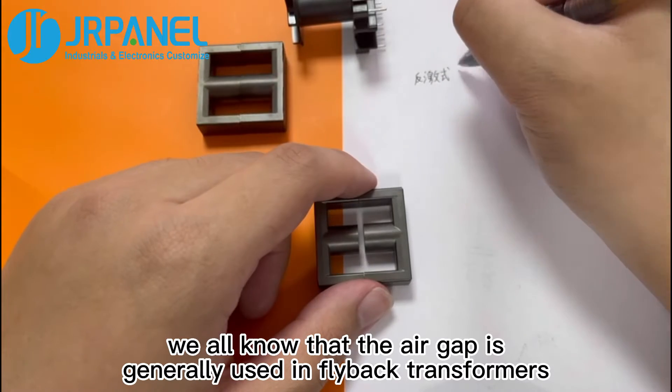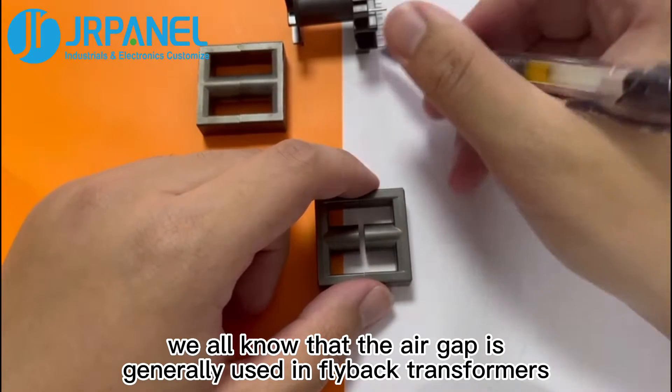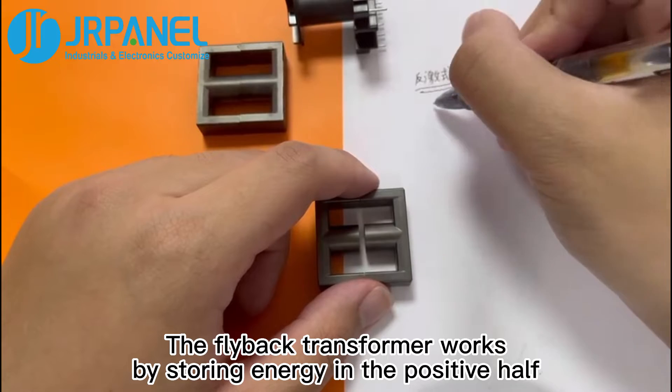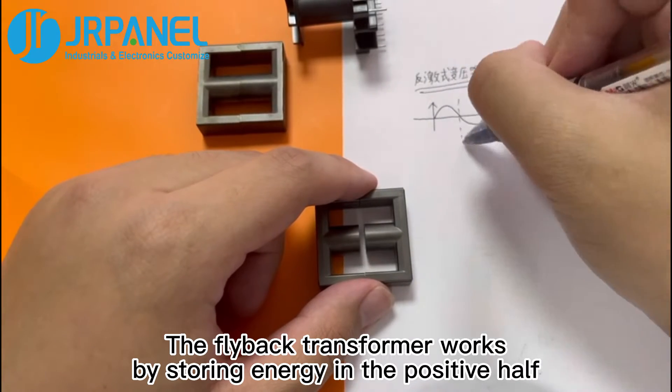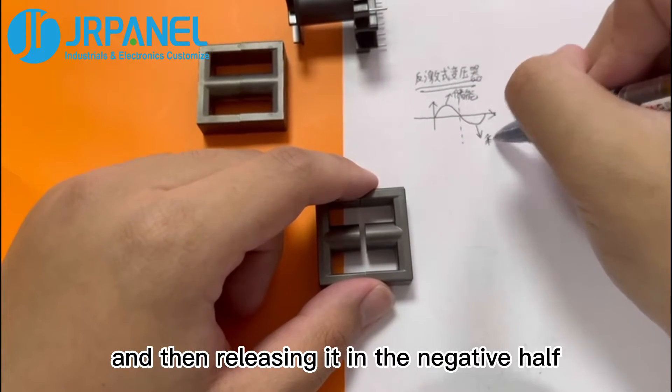First of all, we all know that the air gap is generally used in flyback transformers. The flyback transformer works by storing energy in the positive half and then releasing it in the negative half.